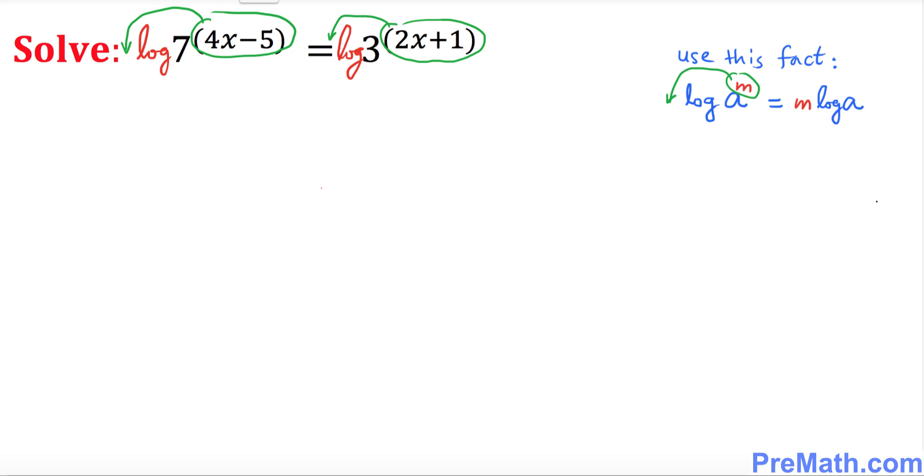So what that means is our problem is going to look like this. This exponent, put it in the front: 4x minus 5, outside, then log of 7 equals the same thing. This exponent, move it out to front: 2x plus 1, log of 3.